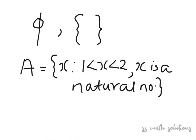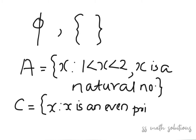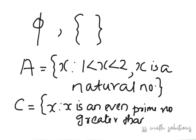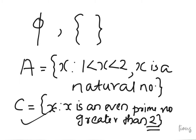One more example: let C = {x : x is an even prime number greater than 2}. We know there is only one even prime number, which is 2. So there is no even prime number greater than 2, which means C is a void set or null set. Hope you understood how to define the empty set.